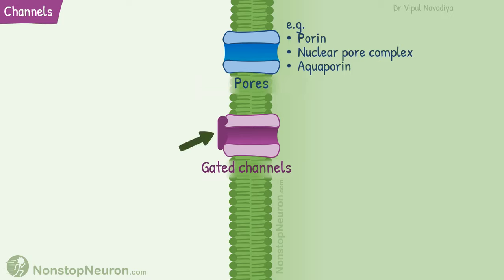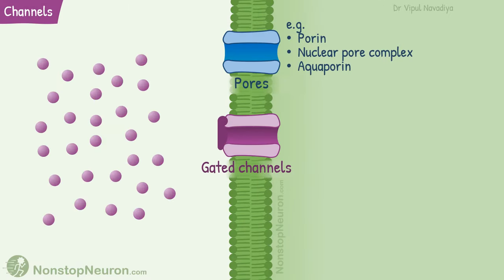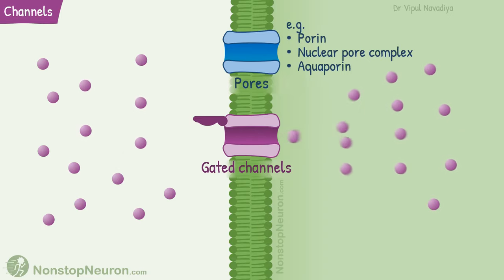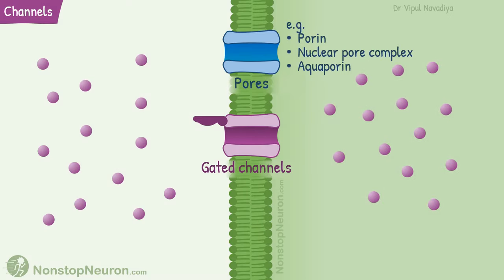Gated channels, on the other hand, are not always open. They have gates that control the opening or closing of the channel. When the gate is closed, ions cannot move through it. But when the gate opens, multiple ions can flow through its pore simultaneously.